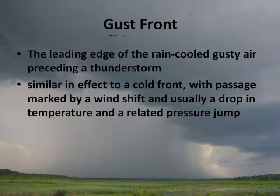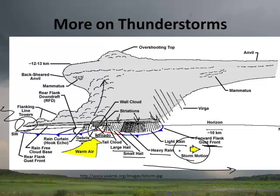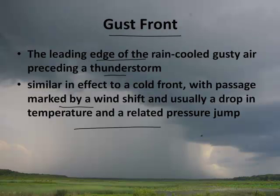Speaking of the gust front — that's the leading edge of the rain-cooled, gusty air preceding a thunderstorm. It's similar to a cold front, with passage marked by a wind shift, usually a drop in temperature, and a related pressure jump. That gust front produces the amazing wind that starts at the beginning of a thunderstorm.